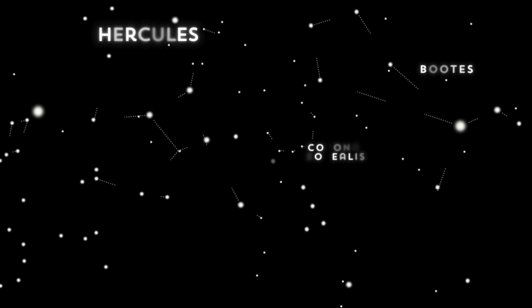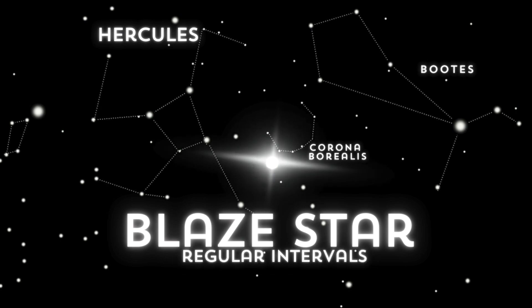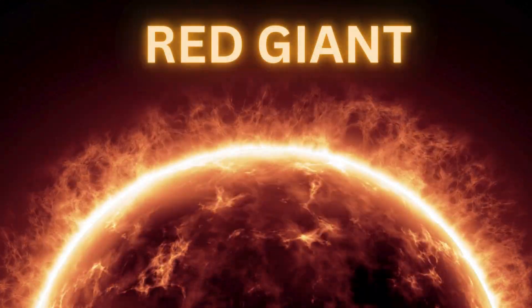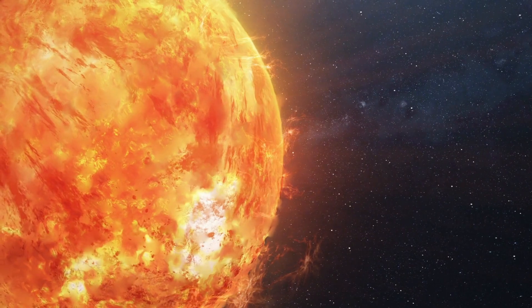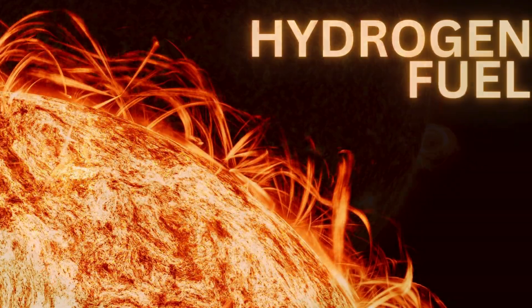Usually, it is too faint to see without a telescope. It has earned the nickname Blaze Star, due to its dramatic outbursts of brightness. T CrB consists of two stars, a red giant and a white dwarf. The red giant is in the late stages of its evolution, having expanded significantly as it depletes its hydrogen fuel.